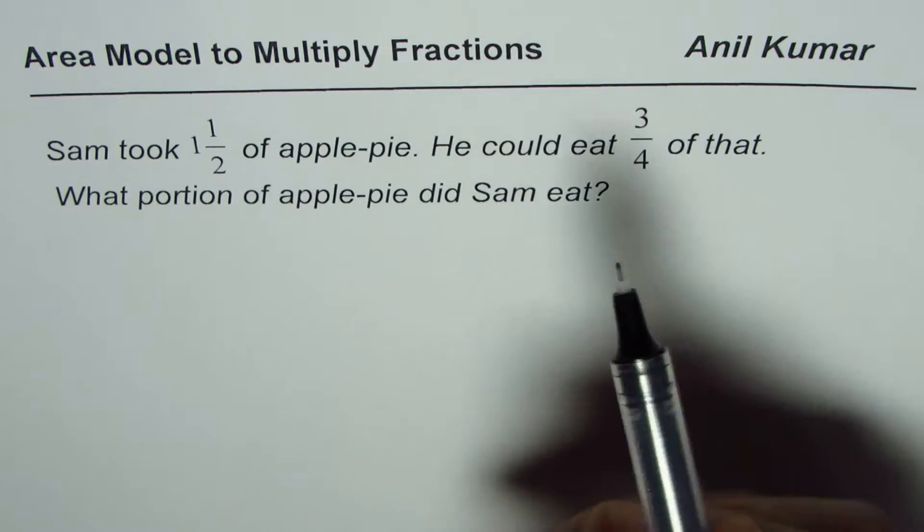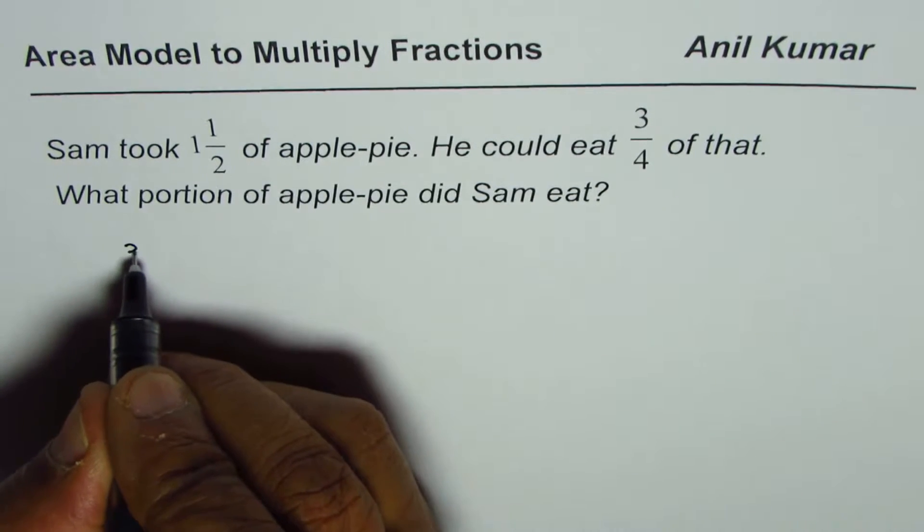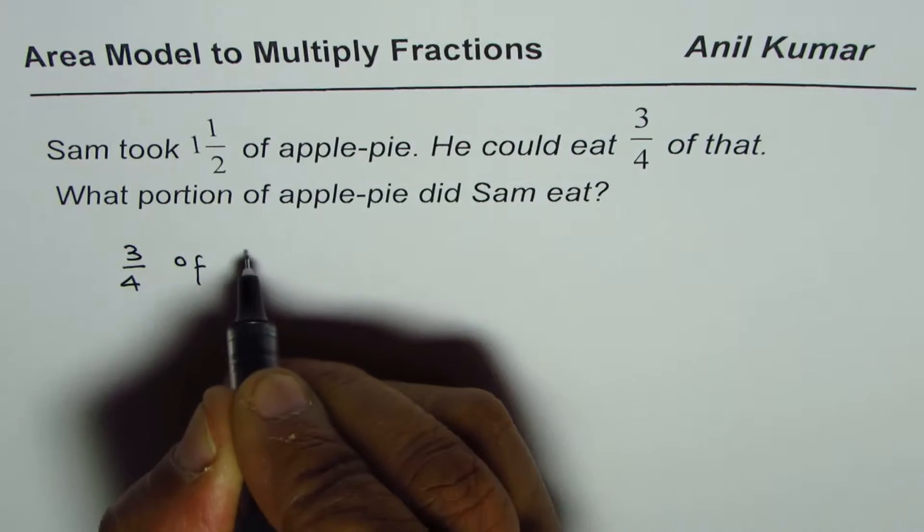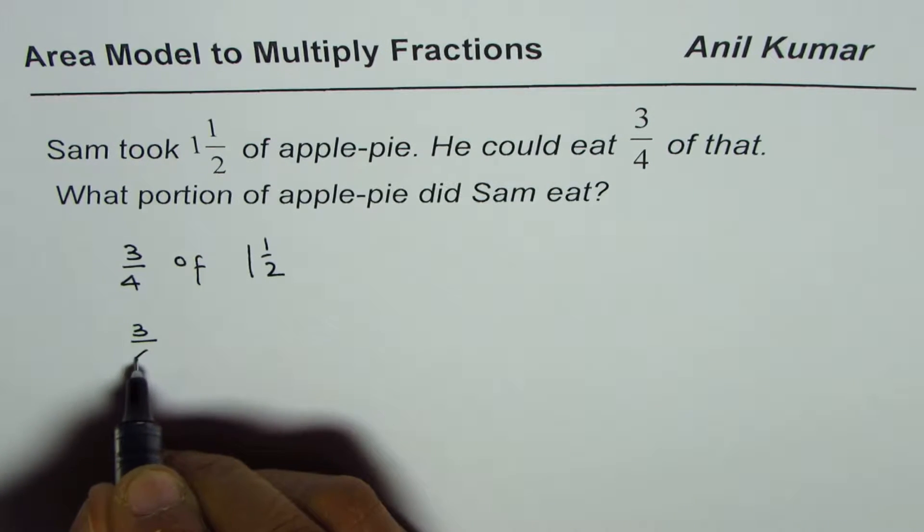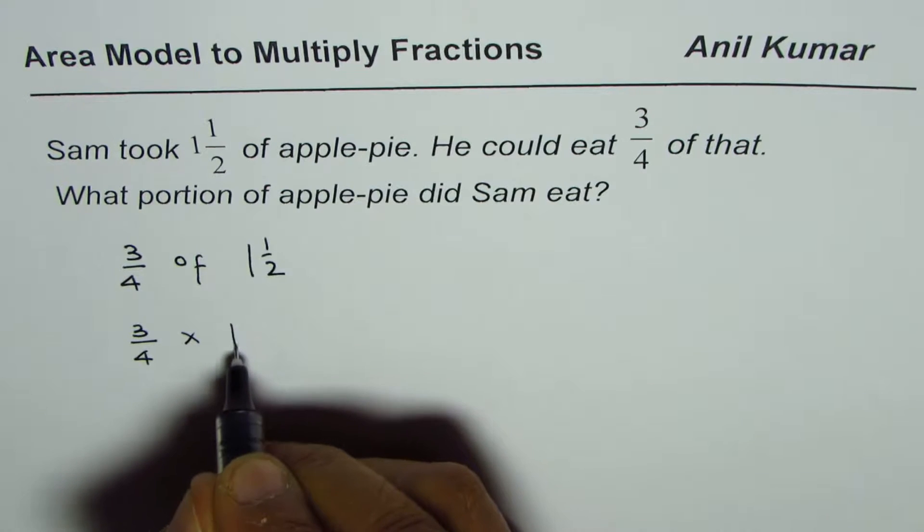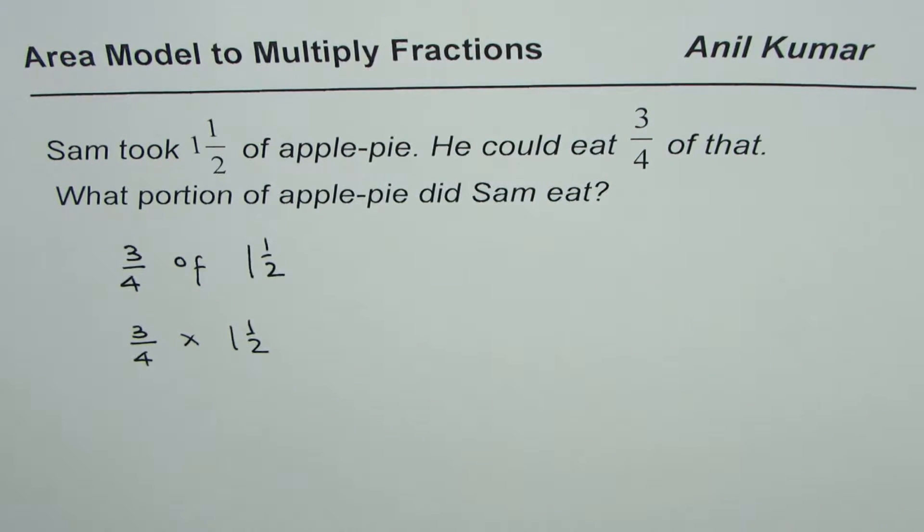In this question, it is very clear he ate three-fourths of one and a half. It means three-fourths times one and a half. So we need to find the product of fractions. Here we see there is a mixed number.